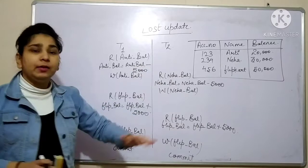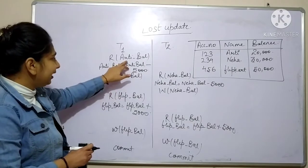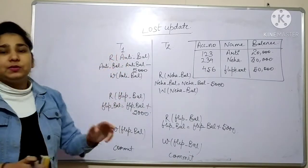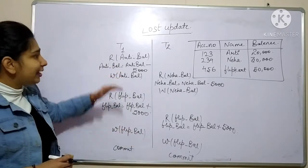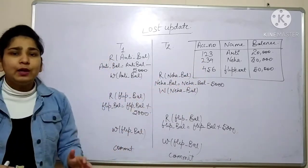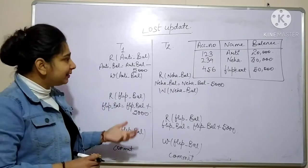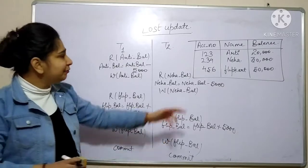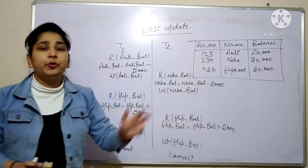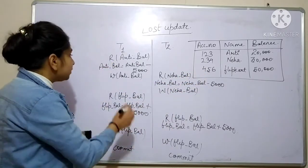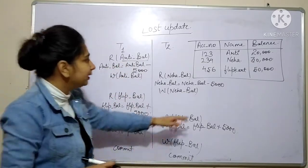I am executing both transactions in parallel mode. Initially, the CPU is running transaction T1. Since T1 is transferring 5,000 rupees from Aarti's account to Flipkart's account, it is deducting 5,000 rupees from Aarti's account and adding 5,000 rupees to Flipkart's account. First, we are reading the balance amount of Aarti's account from the database.